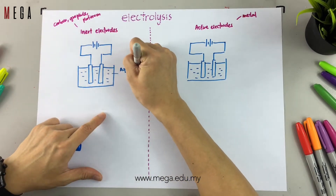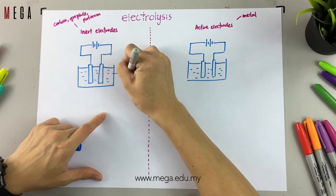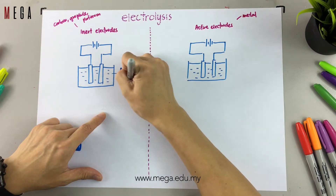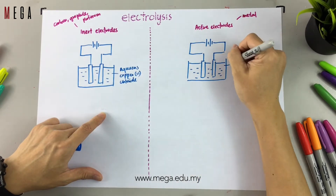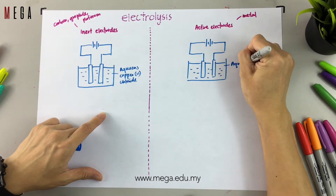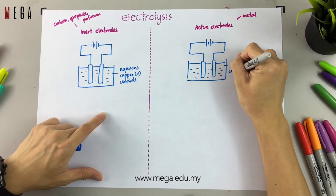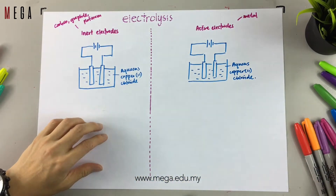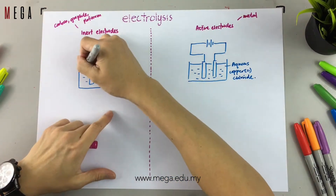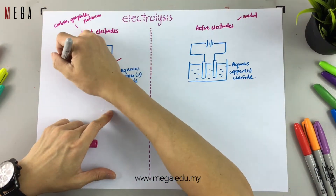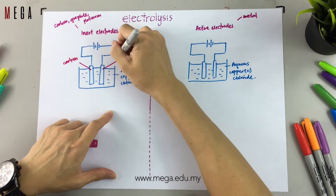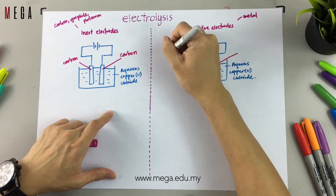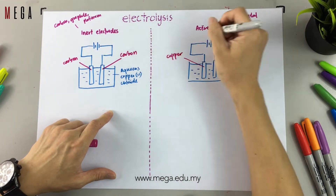For example, we have copper chloride as the electrolyte for both setups, but with different electrodes. For the inner electrode setup, we use carbon; for the active electrode setup, we use copper.